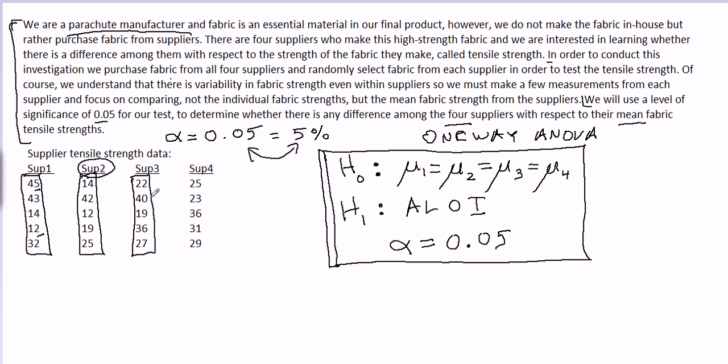We collected a random sample of tensile strengths from supplier one, and then quite independently we collected a random sample of tensile strengths from supplier two. Then we did the same thing for supplier three and supplier four.